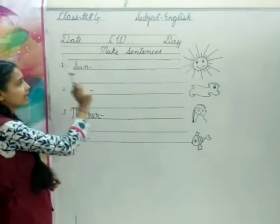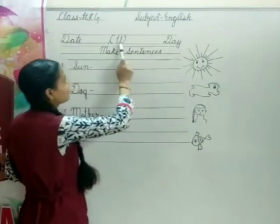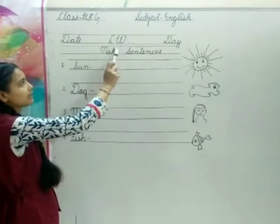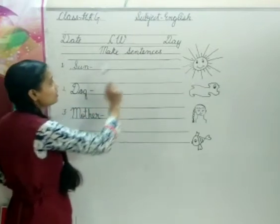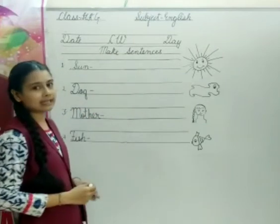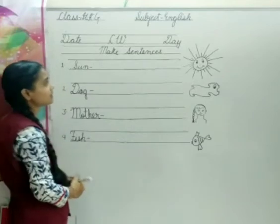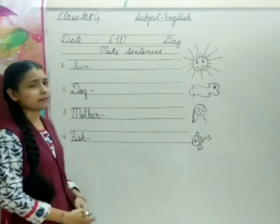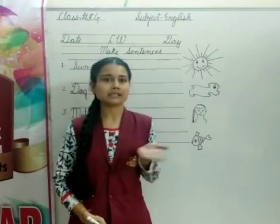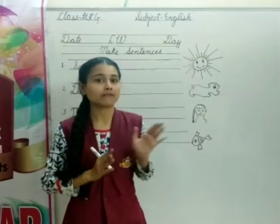First date on the left, date on the right, in the center there is CW that is classwork. In the second line, in the center, you should mention topic that is main sentences. Okay, main sentences means what does it mean? We will make third sentence and make a sentence. Means we will make third sentence.